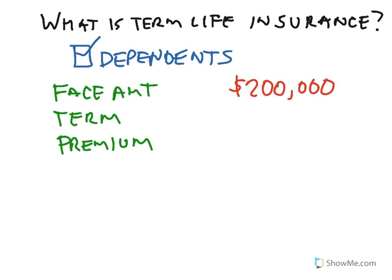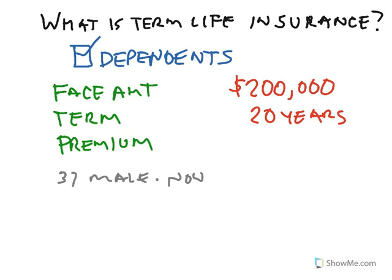The term also varies — it can be 10 years, 5 years. I'm just going to use a term of 20 years. To give you an example, I ran a couple of quotes on myself. I'm 37, male, non-smoking — they do take your health into consideration — and healthy. Based on that, the premium per month was anywhere from $13 to $20.